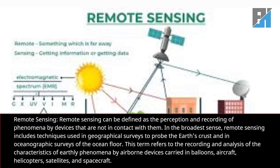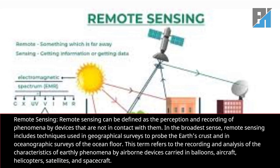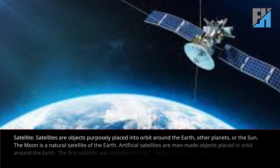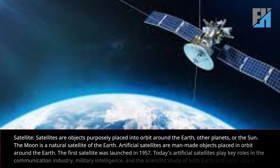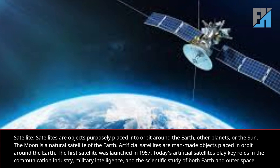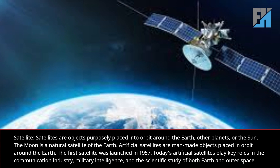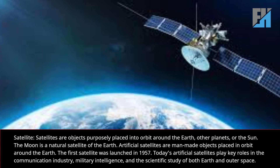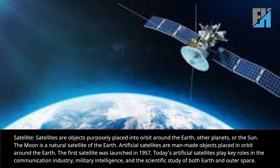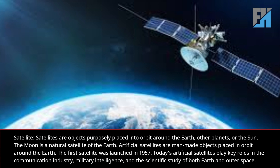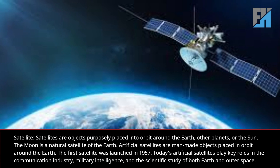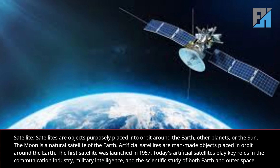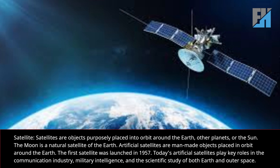Airborne devices are carried in balloons, aircraft, helicopters, satellites, and spacecraft. Satellites are objects purposely placed into orbit around the earth, other planets, or the Sun. The moon is a natural satellite of the earth. Artificial satellites are man-made objects placed in orbit around the earth. The first satellite was launched in 1957. Today's artificial satellites play key roles in the communication industry, military intelligence, and the scientific study of both earth and outer space.